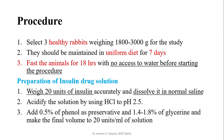To prepare the insulin drug solution, weigh 20 units of insulin accurately and dissolve it in normal saline. Acidify the solution with hydrochloric acid and maintain pH up to 2.5. Add 0.5 percent phenol as a preservative and 1.4 to 1.8 percent glycerin, and make the final volume to 20 units per ml of solution.